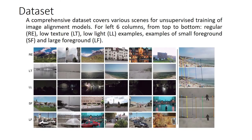We also propose a dataset that covers five different scenes: regular, low texture, low light, small foreground, and large foreground. We also manually match several points in the paired images as ground truth for evaluation.